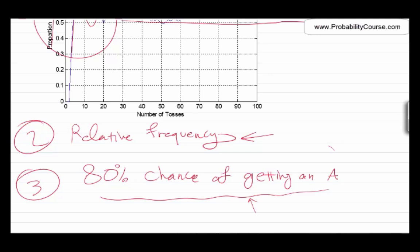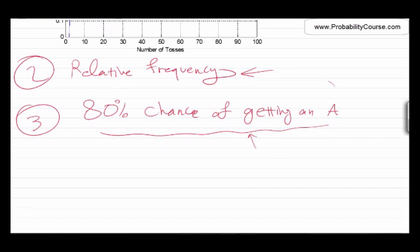So in this case, when you say the probability of getting an A is 80%, what you are doing, in fact, is you are providing your degree of belief. It's the same thing when people try to predict the outcome of an election. For example, using probability tools, people estimate that the probability of a certain candidate winning is 75% or something like that. So this is a different type of interpretation of probability. And it could be subjective. It could be different from one person to another person.